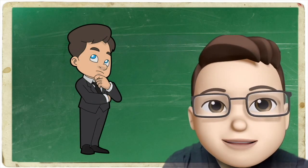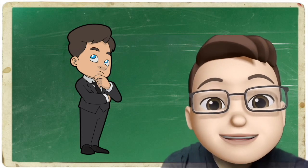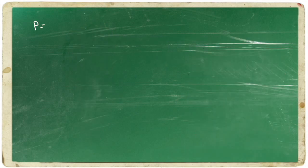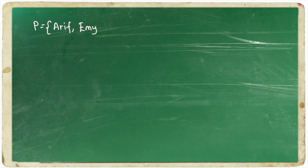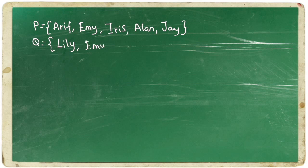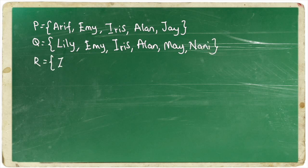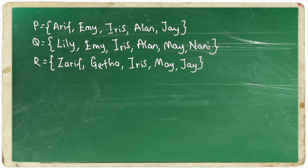How to solve those problems? Let's solve it together. First, we know that P is students who like singing, which are Arif, Amy, Iris, Alan and Jay. Q is students who likes dancing: Lily, Amy, Iris, Alan, May and Nani. Finally, R, students who likes drawing, which are Zarif, Gita, Iris, May and Jay.